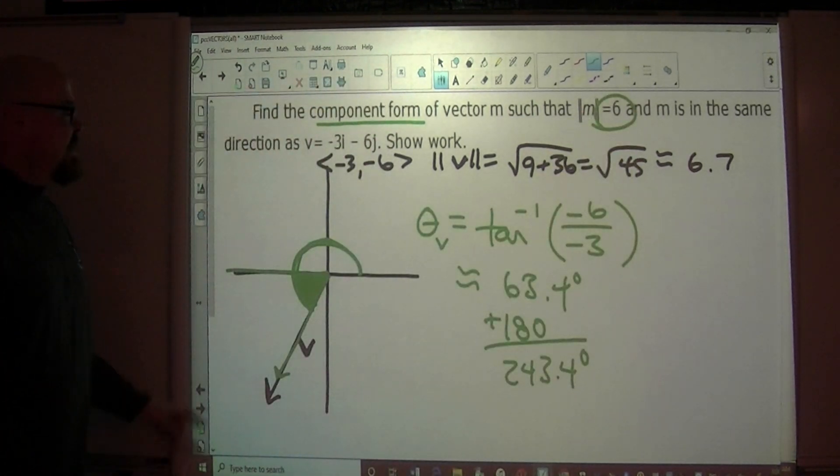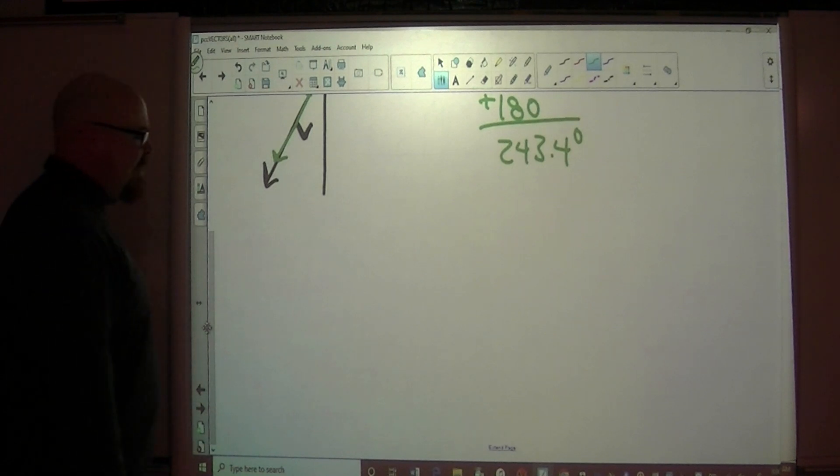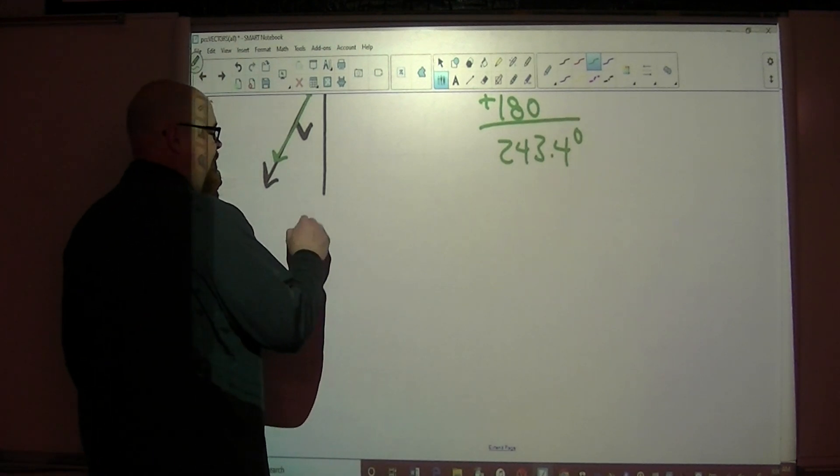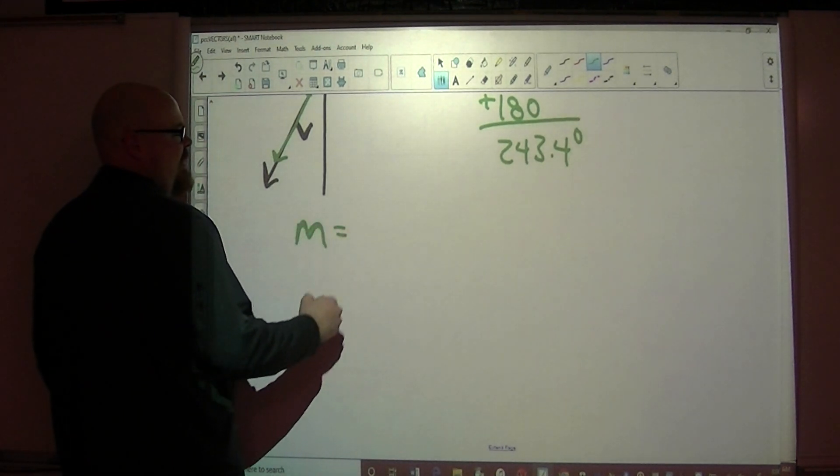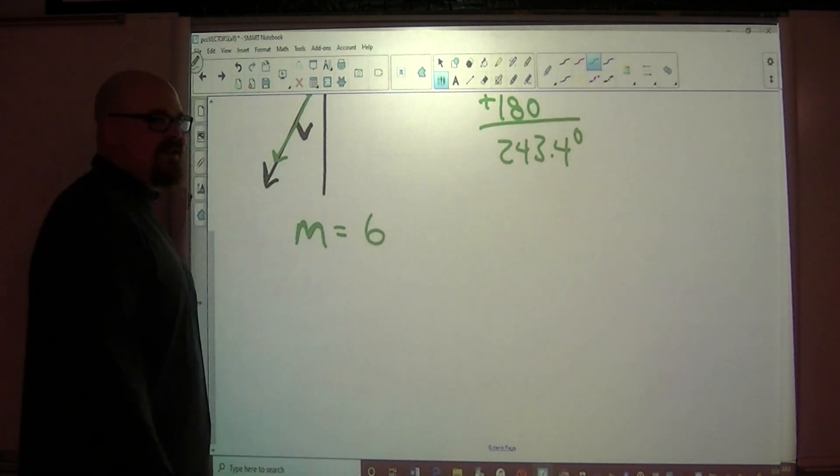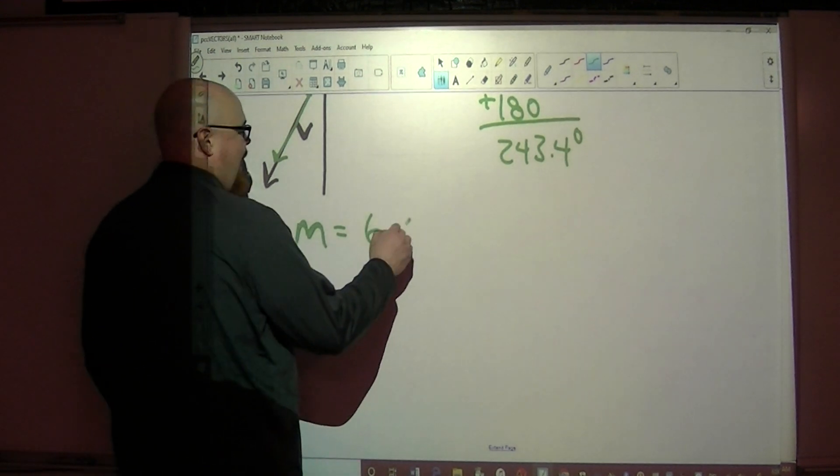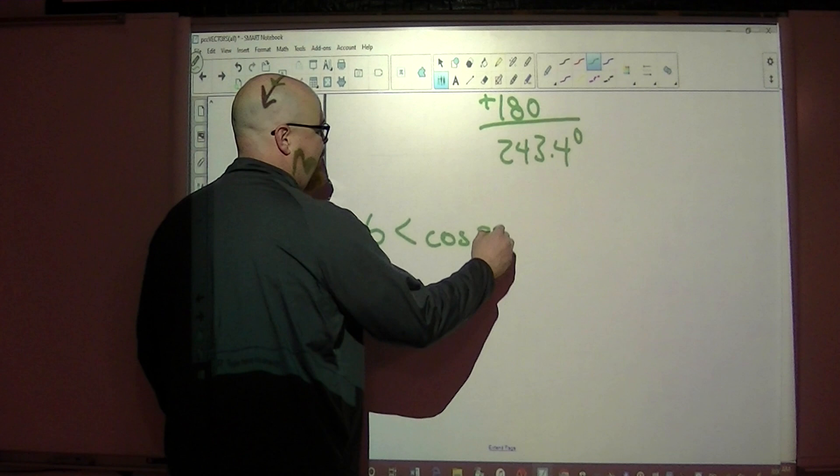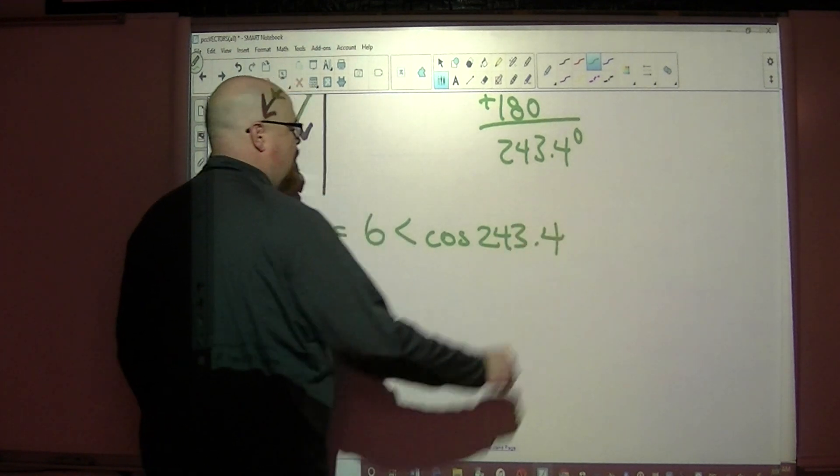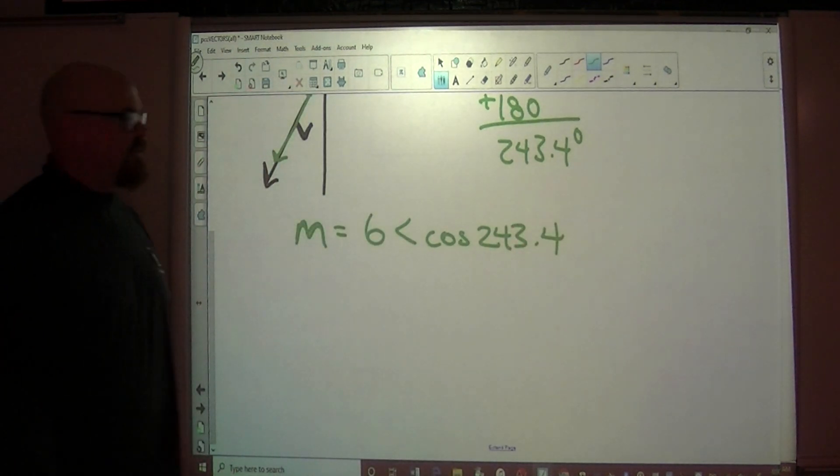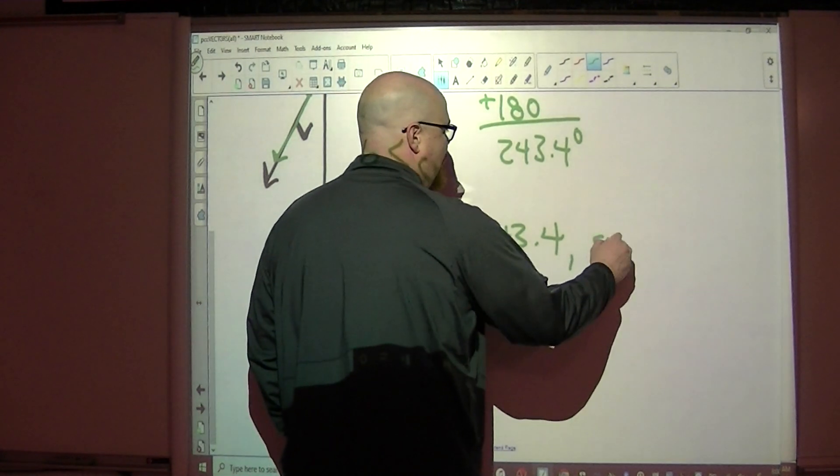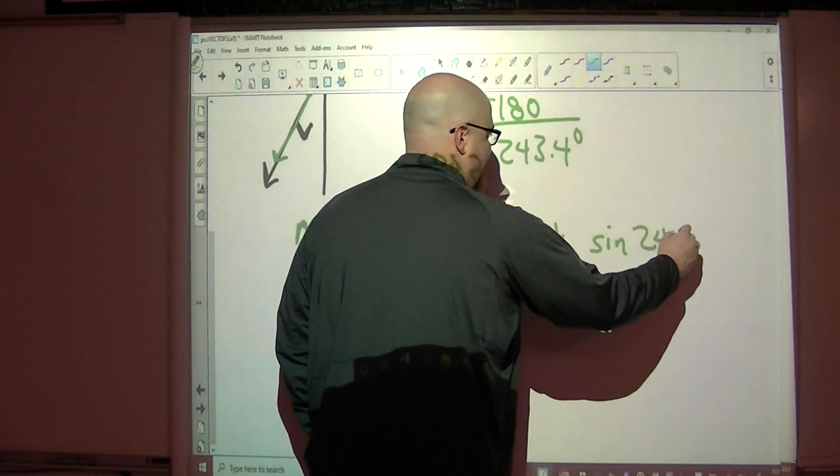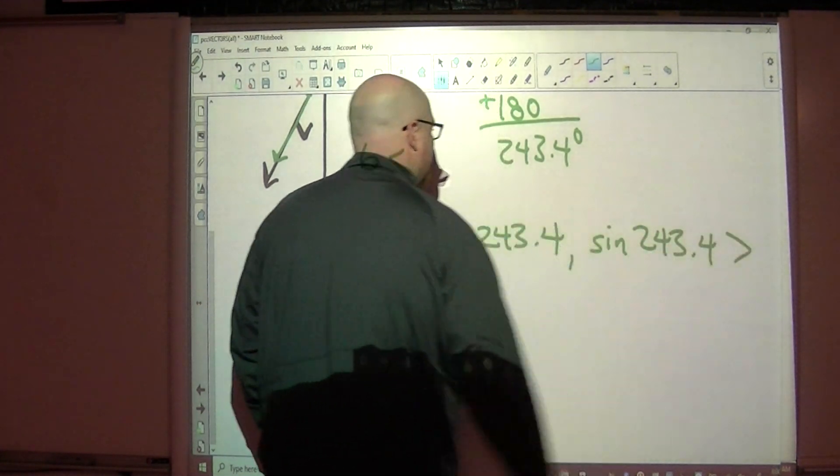So we're going to take this problem one step further now. Vector m has the magnitude of 6 and it has a horizontal component of cosine 243.4 and a vertical component of the sine of 243.4.